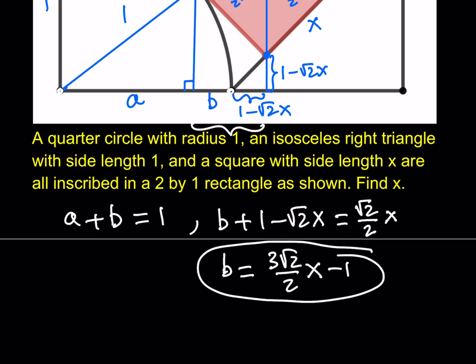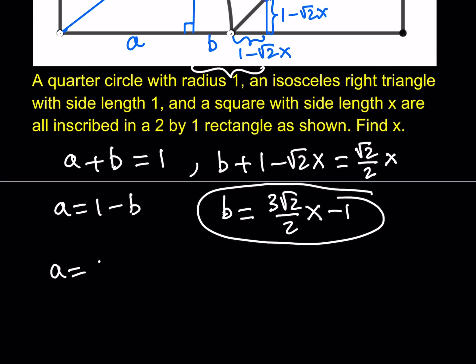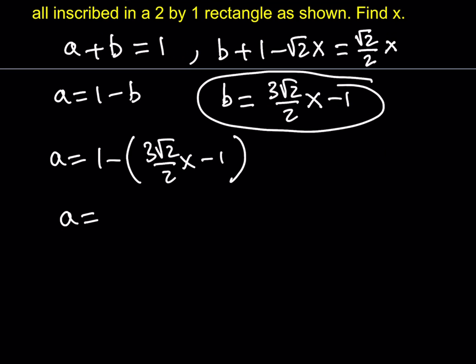Then I can substitute and find a in terms of x. Now I have a and b in terms of x. So let me solve this for b then. If you add root 2 of x, that's going to make 3 root 2 over 2x and then minus 1. So this is my b value. I'm going to use that. And to find the a value, you can basically say that a plus b is equal to 1, so I can write a as 1 minus b. From here, a is going to equal 1 minus 3 root 2 over 2x minus 1. And if you expand this, you're going to get 2 minus 3 root 2 over 2x. And this is my a value. So I got a and b in terms of x.